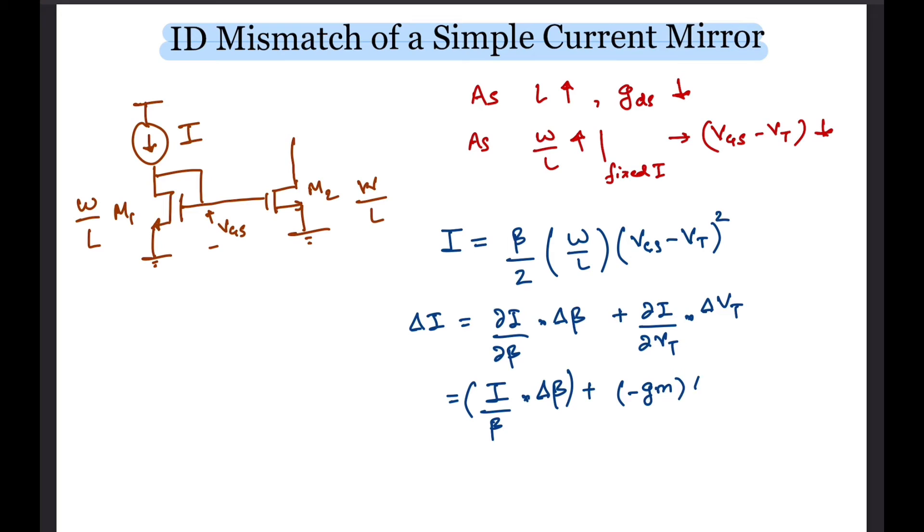This can be obtained even by taking the derivative of I with respect to VT. Now we have an expression for delta I, but we are more interested in delta I over I. Does a delta I of 1 microampere affect us if the current is 1 milliampere? No, but it sure affects us if the current was 1 microampere to begin with.